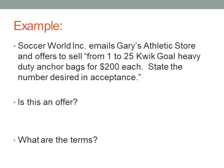'I offer you $20 to shovel my driveway.' We know it's me, we know it's you, we know you're shoveling a driveway, and you know you're getting $20. We don't know when you're shoveling or when you'll get paid, but we have reasonably definite terms. Another example: Soccer World Inc. emails Gary's Athletic Store and offers to sell from 1 to 25 quick-goal heavy-duty anchor bags for $200 each. 'State the number desired in acceptance.' That is a valid offer — if Gary wants to accept, he just says 'I'll take 5.'